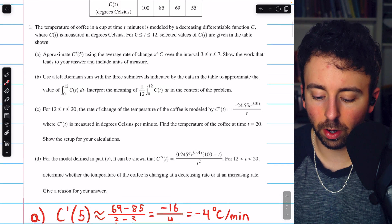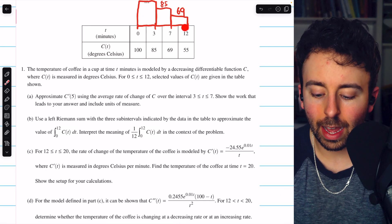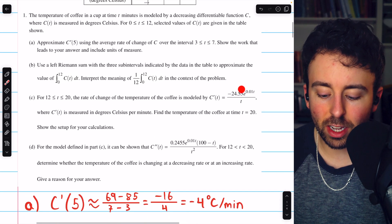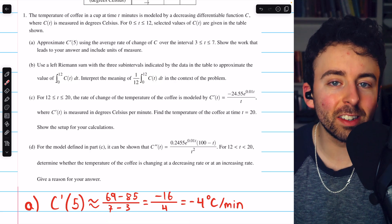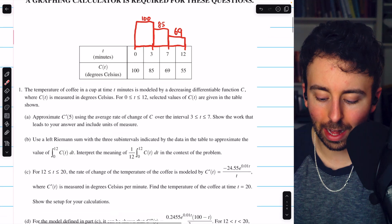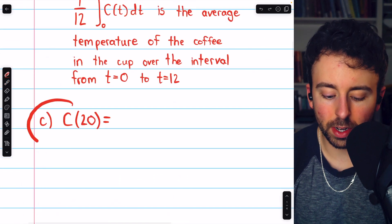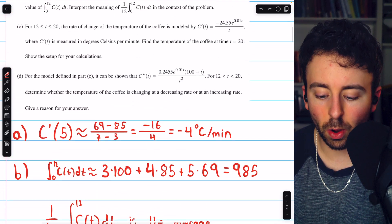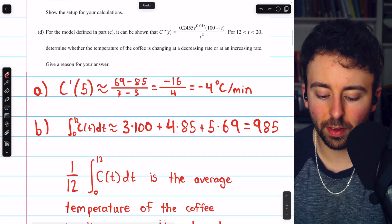So this will be pretty straightforward. We'll just take the last value we were given in our table. At t equals 12, we know the temperature is 55. And then we can use this derivative, this rate of change, to integrate and accumulate the temperature from t equals 12 up to the desired time at t equals 20. So down here, what is the temperature of the coffee in the cup at time t equals 20? Well, it's going to be the temperature of the coffee at time t equals 12, which was given as 55.